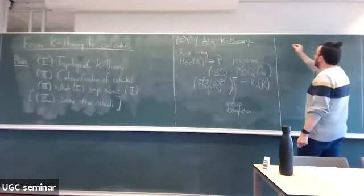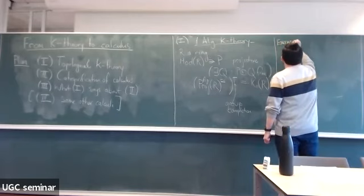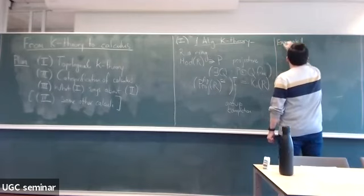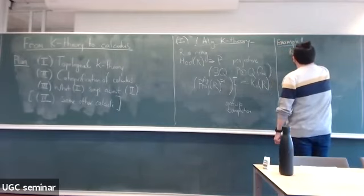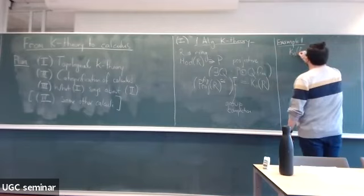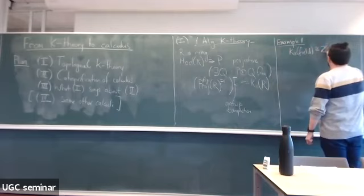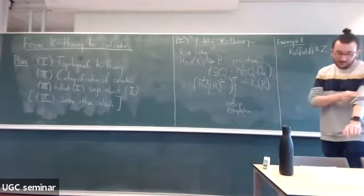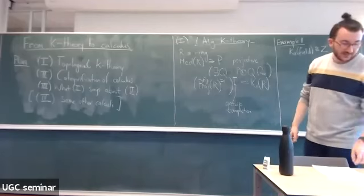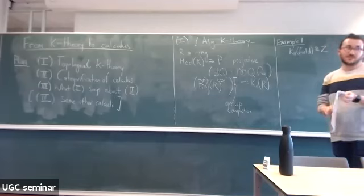So the one example is that K₀ of a field is the integers. Modules over a field are vector spaces, and finite-dimensional vector spaces are classified by their dimension — so the monoid is the natural numbers.